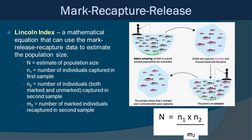The Lincoln Index is a mathematical equation that uses mark-release-recapture data to estimate population size by taking a few variables into account. Capital N is the estimate of the population size. N sub 1 is the number of individuals captured in the first sample session. N sub 2 is the number of individuals both marked and unmarked captured in the second session — that's the total number captured in the second sample. And then there's the number of marked individuals recaptured in the second sample. The equation is: N equals N sub 1 times N sub 2 divided by the number of marked individuals recaptured.